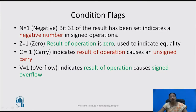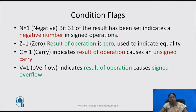Let us look first at the condition flags. The first bit is N, which stands for negative. When N equals 1, bit 31 of the result has been set, indicating a negative number in signed operations. Z is the zero flag. When Z equals 1, it indicates that the result of the operation is zero, and it is used to indicate equality.